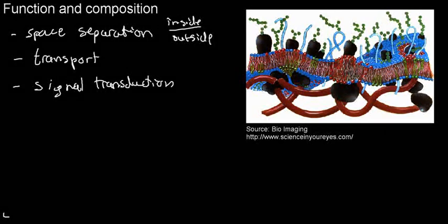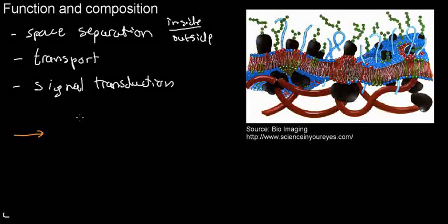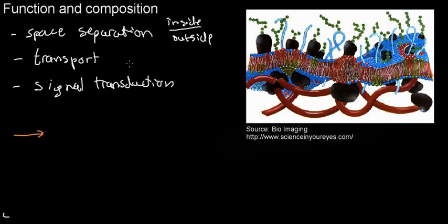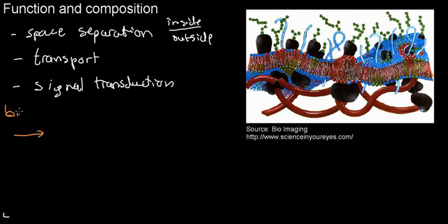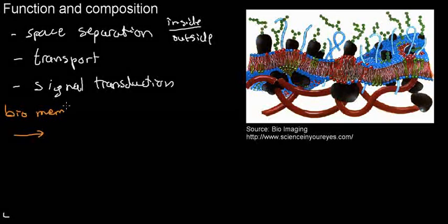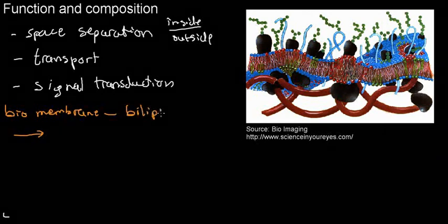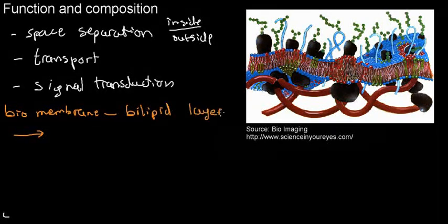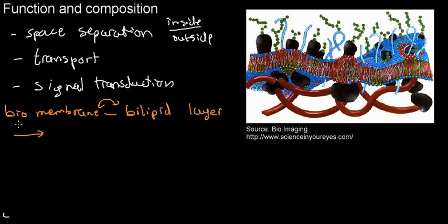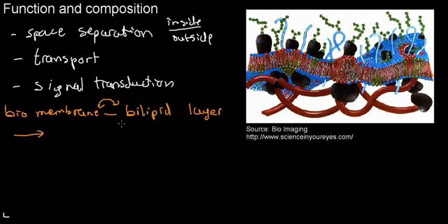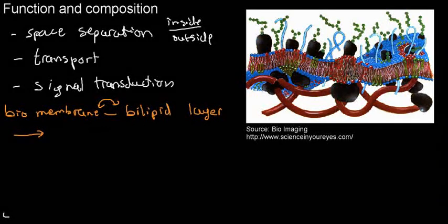Let's talk about the composition. We have three main components in the biological membrane. The biological membrane is often referred to as the bilipid layer — these terms are used interchangeably — and in a few minutes we'll learn why.